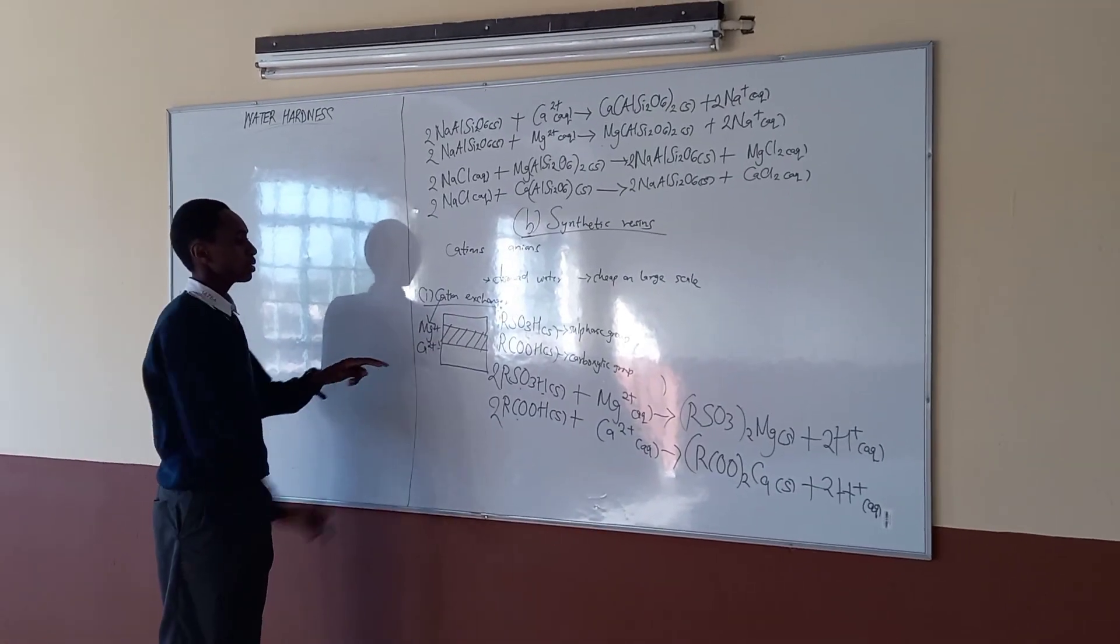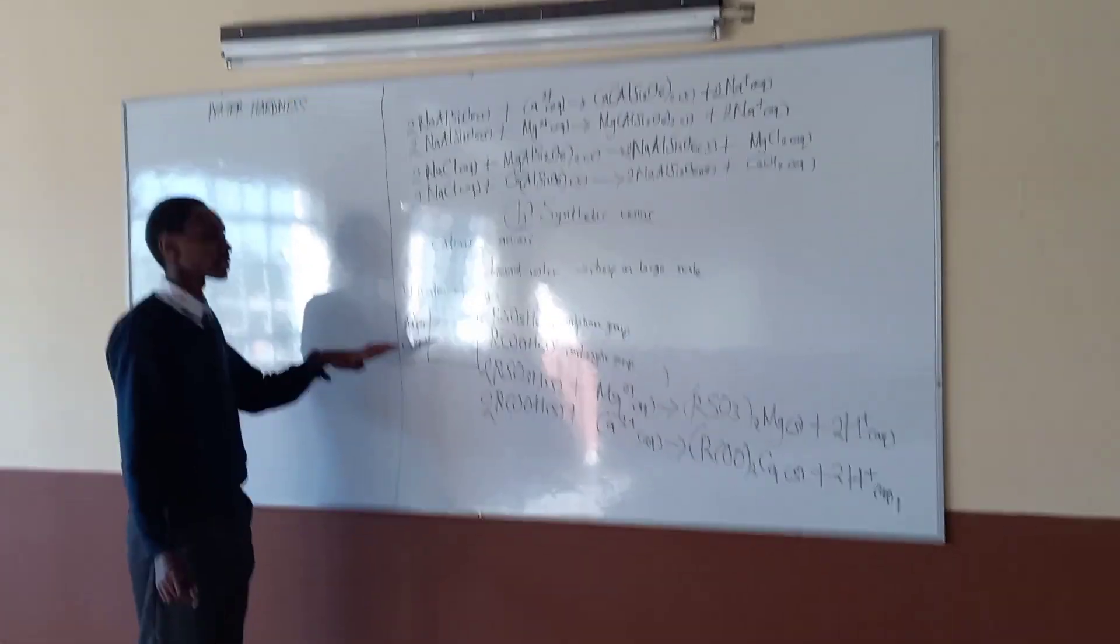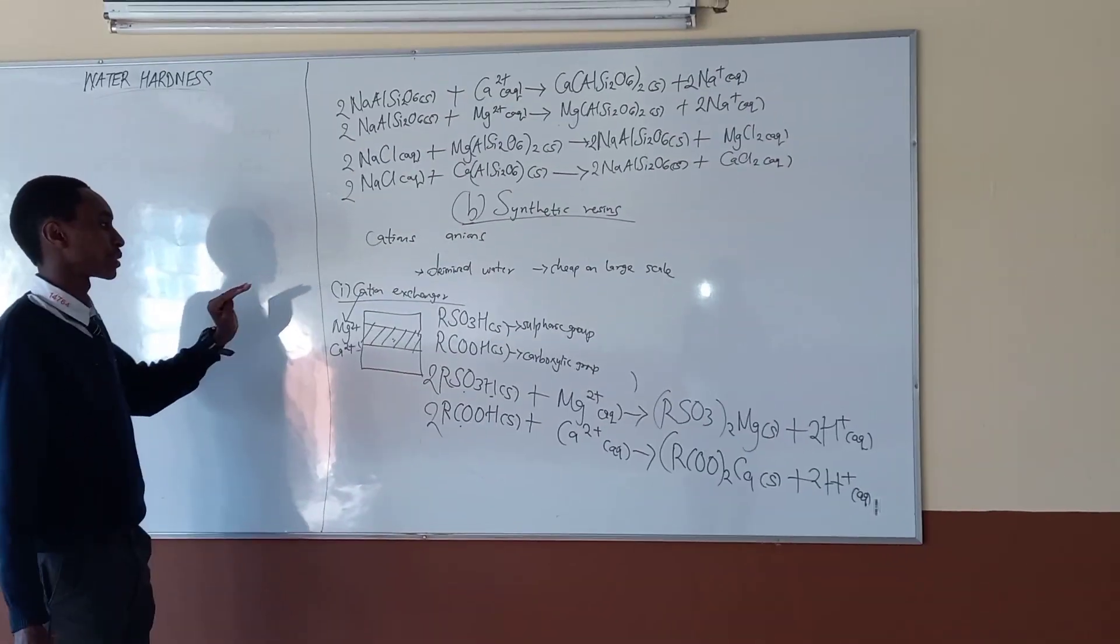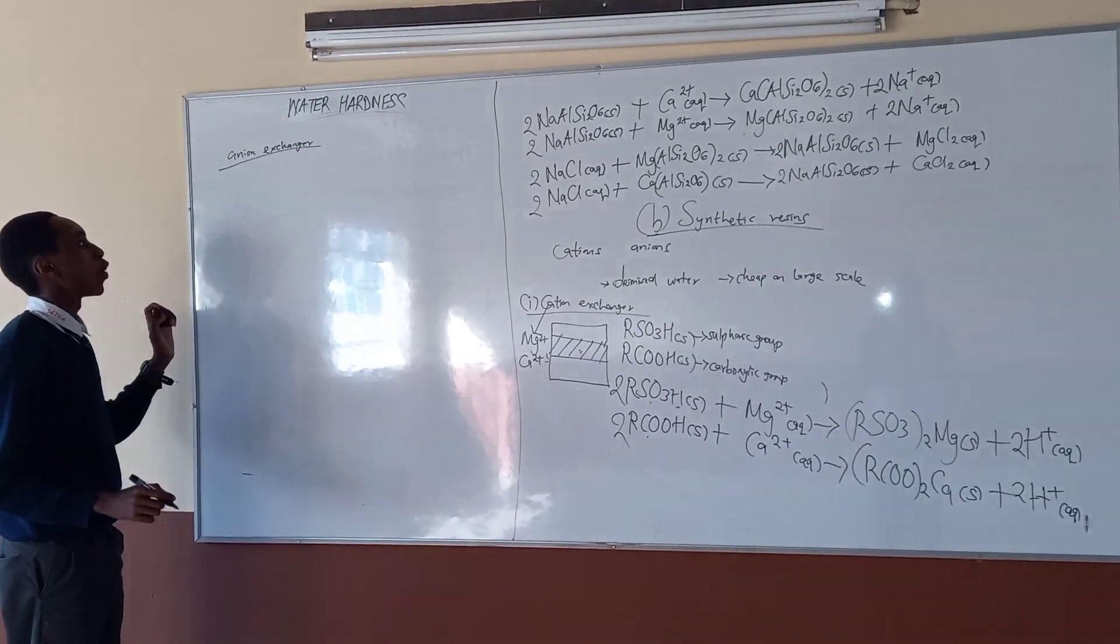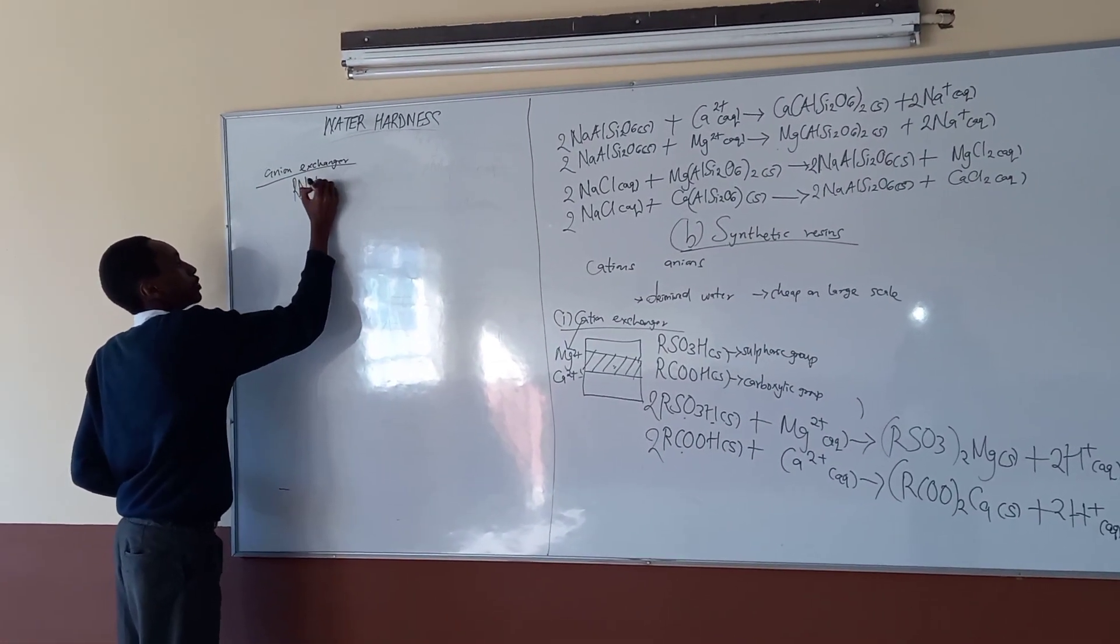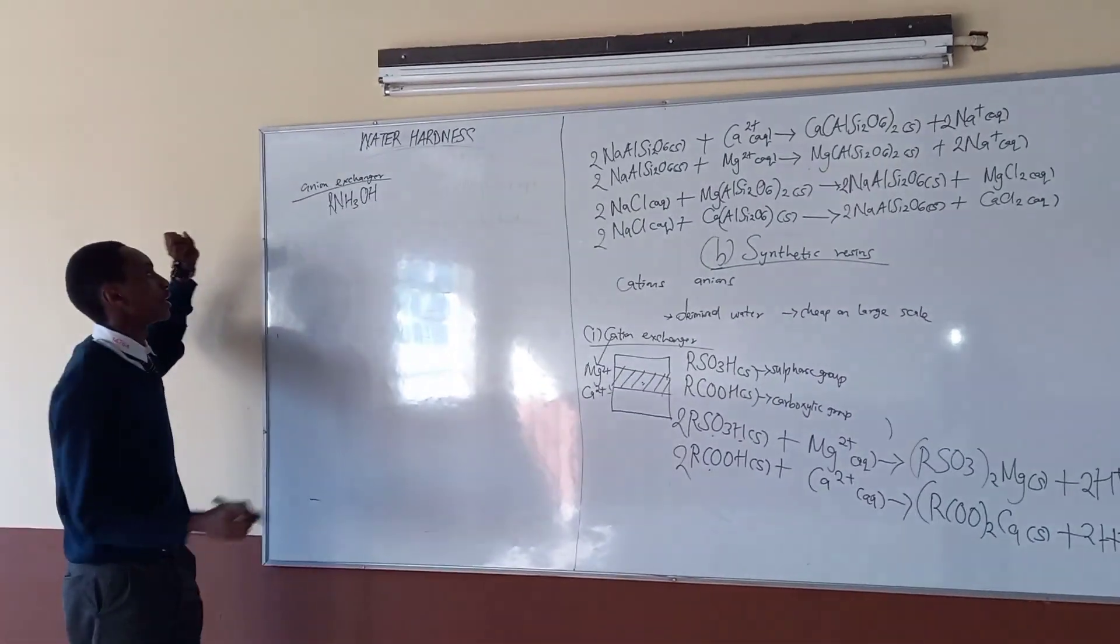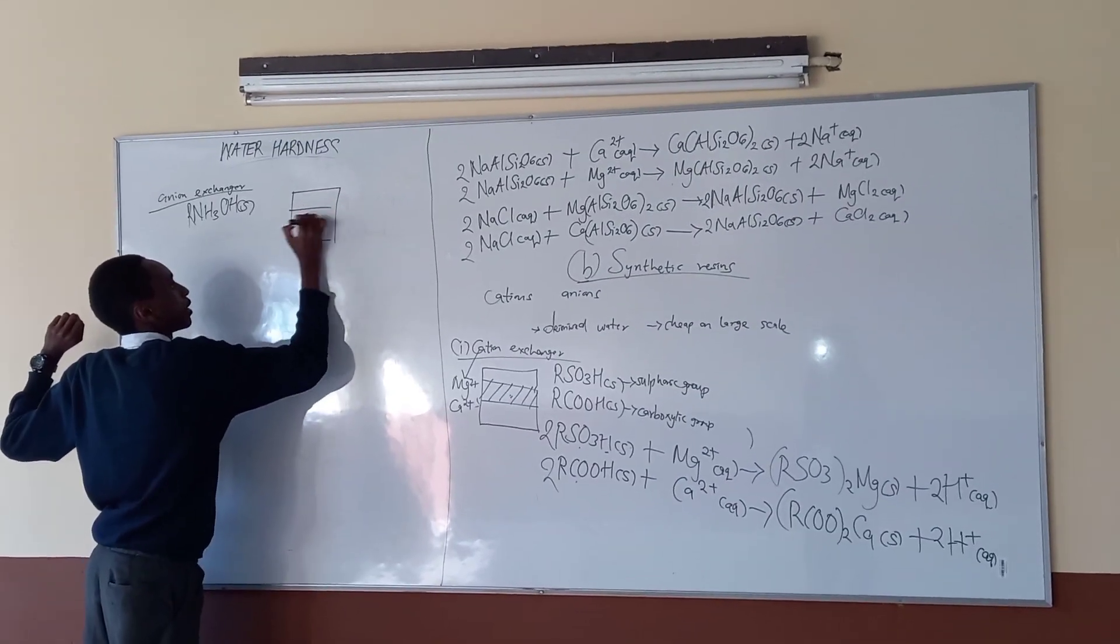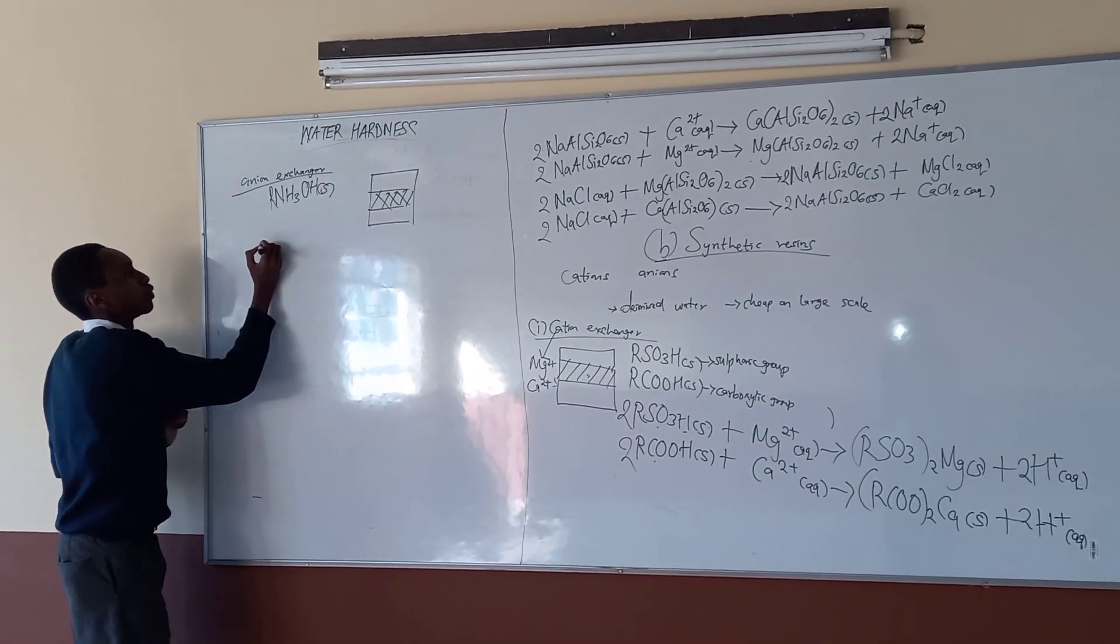As for the sulfonic group or carboxylic group, which is being used as the synthetic resins, when it is used up, it is replaced. In the cation exchanger, it is replaced. Let's move to the anion exchanger. We use a basic resin, specifically RNH3OH solid. This was what was in the 2020 question. This is our tank. We have the basic resin.